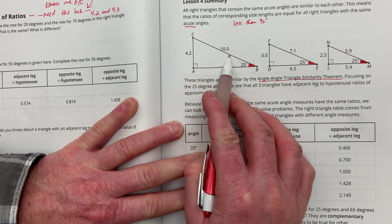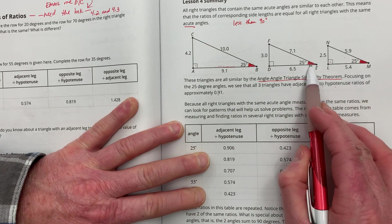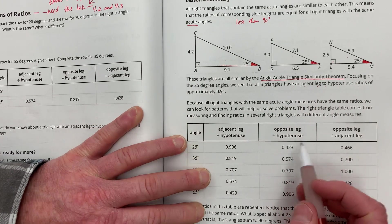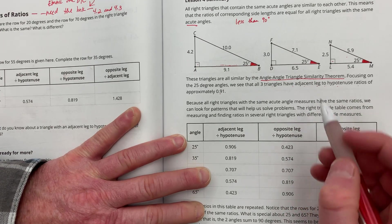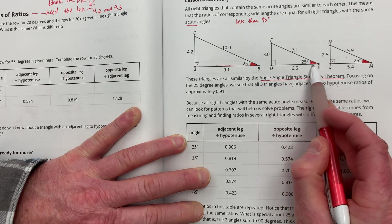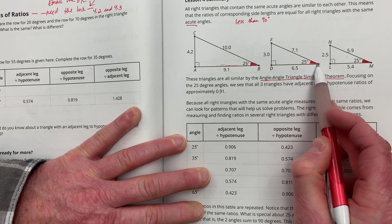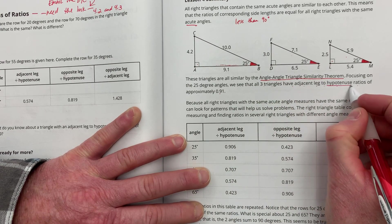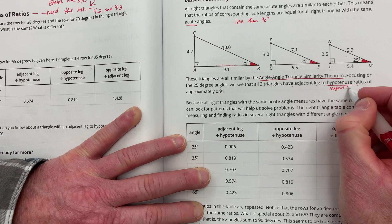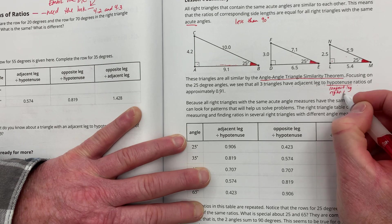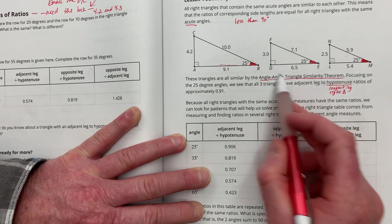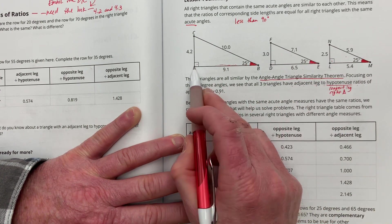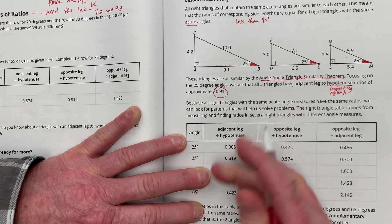So, in all these instances where we have a right triangle with a 25 degree angle, the ratio of this leg, the adjacent leg, divided by the hypotenuse, the longest leg of a right triangle. So, the adjacent leg divided by the hypotenuse in all three of these triangles is 0.91.